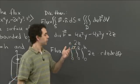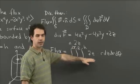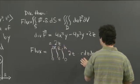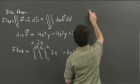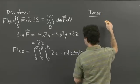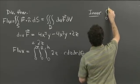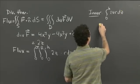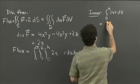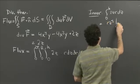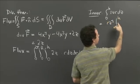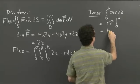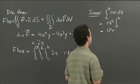Now we just compute the iterated integral. The inner integral is the integral from 0 to h of 2zr dz. Treating r as a constant, that equals rz squared evaluated from 0 to h, which gives h squared r.